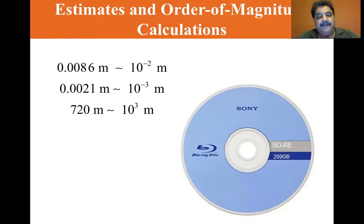So let's look. 0.0086 meters is 8.6 times 10 to the minus 3. But just to give it an order of magnitude, since the 8.6 is greater than the 3.162, we bump it up. Instead of just saying 10 to the minus 3, we say 10 to the minus 2. 0.0021 is 2.1 times 10 to the minus 3. But since 2.1 is less than the 3.162, we just leave the 10 to the minus 3. 720 meters is 7.2 times 10 to the 2 meters. But since the 7.2 is over the 3.162, we bump it up one more and it becomes 10 to the 3 meters.